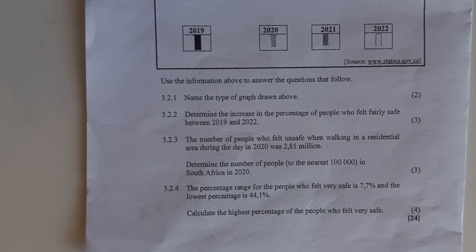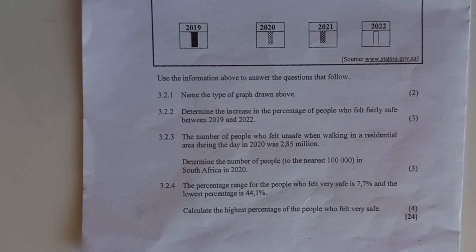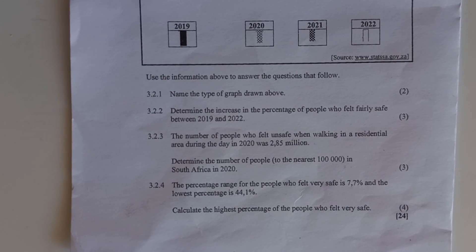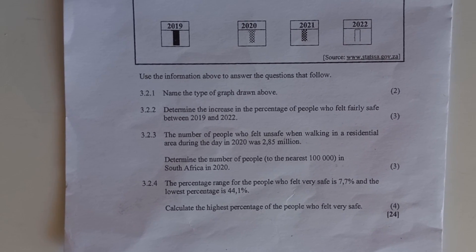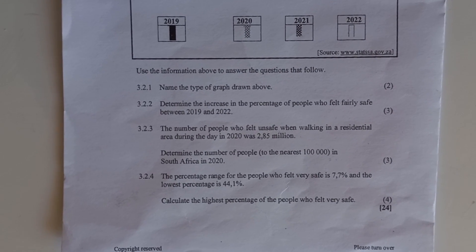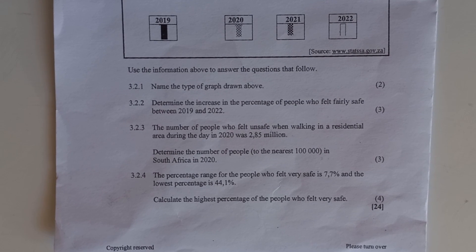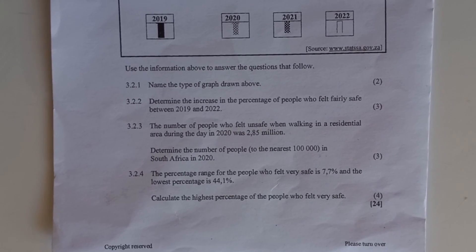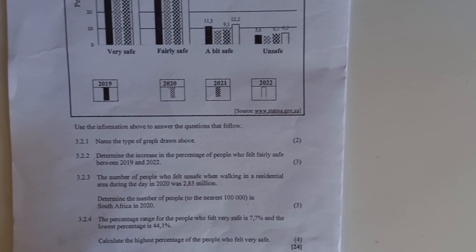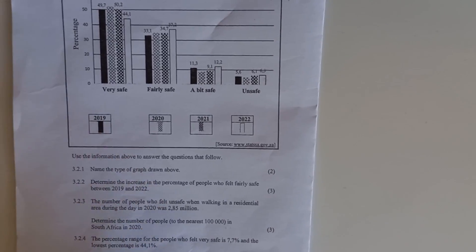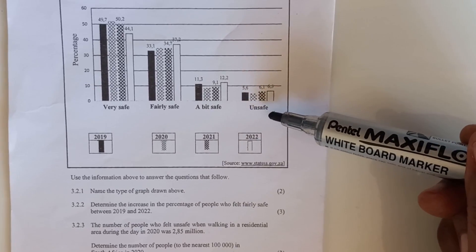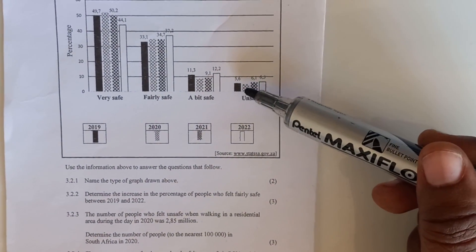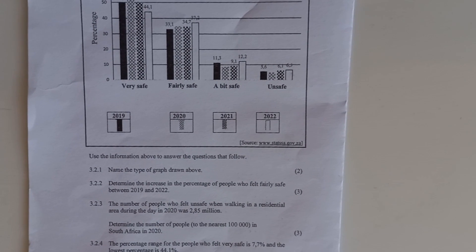Next question 3.2.3. The number of people who felt unsafe when working in the residential area during the day in 2020 was 2.85 million. Determine the number of people to the nearest hundred thousand in South Africa in 2020. They are giving you the number of people that felt unsafe and then they are actually asking for the population during that year. The graph that you should be using is the unsafe one. And then year 2020 is this one.